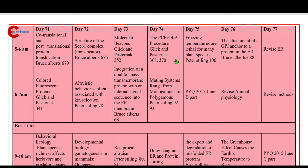Day 74. Morning 5 to 6 a.m.: the PCR OLA procedure. Then 6 to 7 a.m.: mating systems range from monogamous to polygamous, page number 92 and 93.